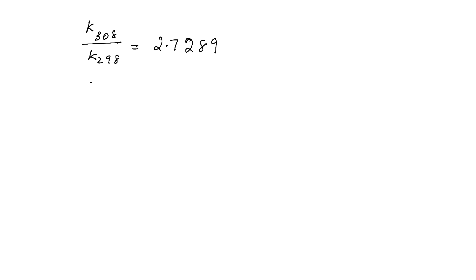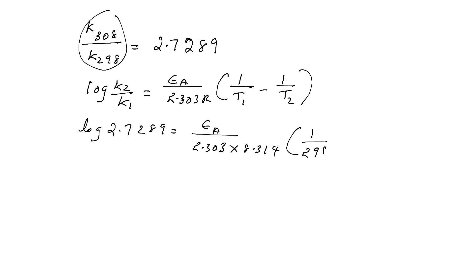Now what is our task? Our task is to find Ea. How to find Ea? Direct write log k2 by k1 is equal to Ea by 2.303 R into 1 by T1 minus 1 by T2. All values you know. Log k2 by k1 you know, what is that? 2.7289. Ea is the unknown. 2.303. What is R? R is 8.314. Temperature T1, what is temperature T1? See, it is 298 minus 1 by 308.